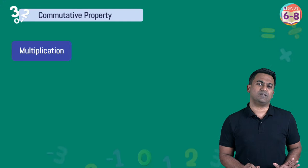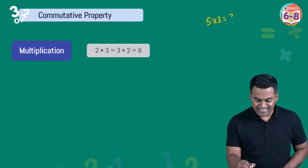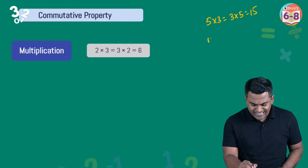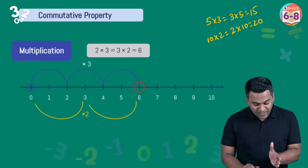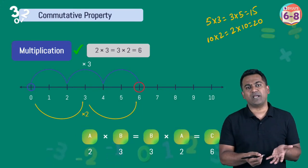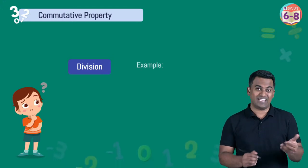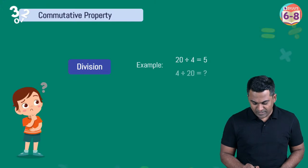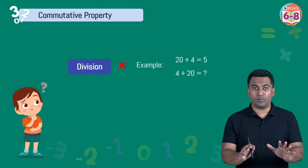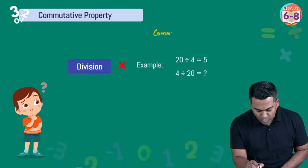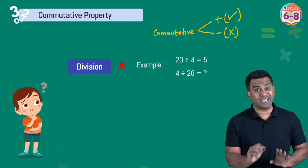For multiplication, order doesn't matter: five multiplied by three equals three multiplied by five, both giving 15. Ten multiplied by two equals two multiplied by ten, both giving 20. So multiplication follows the commutative property: a × b = b × a. For division, 20 ÷ 4 is not equal to 4 ÷ 20 — both are different — so division does not follow the commutative property.